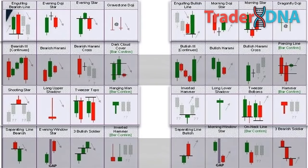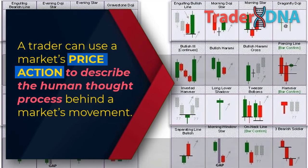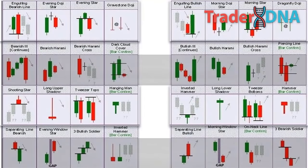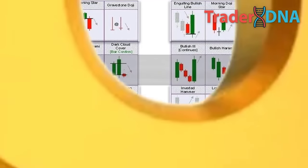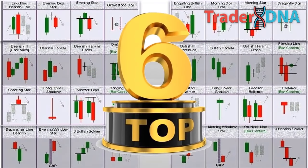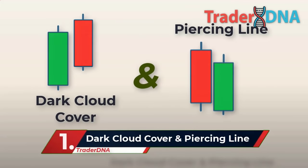A trader can use a market's price action to describe the human thought process behind a market's movement. Every participant in a market will leave price action clues on a market's price chart as they trade. These clues can then be interpreted and used to try and predict the next move in a market. So these are the top six most powerful price action candlestick patterns you must know.